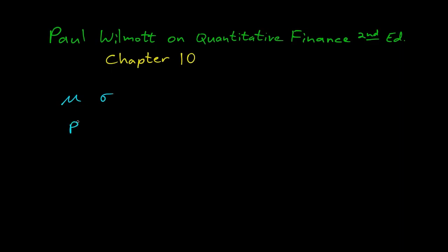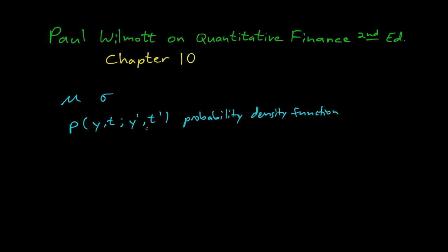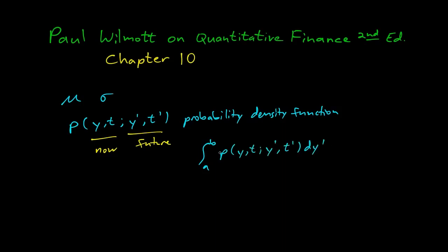So what do you need? You actually need a probability density function p — specifically, p of y-prime at time t-prime given y at t. We're interpreting the given part as 'now' and the density part as the future. To get an actual probability, we integrate: the integral from a to b of p(y,t; y',t') dy' gives us the probability that y is between a and b at time t-prime, given that it's at y at time t.